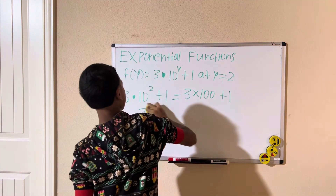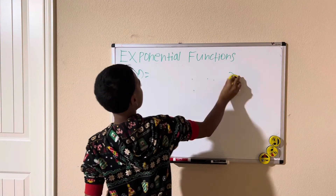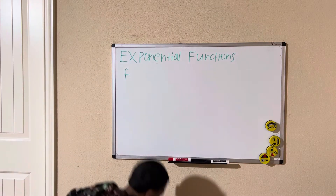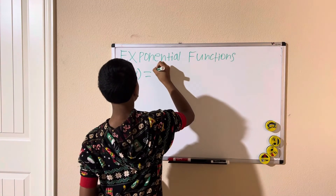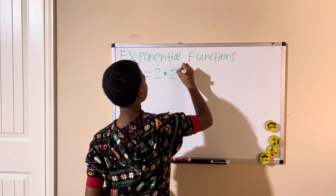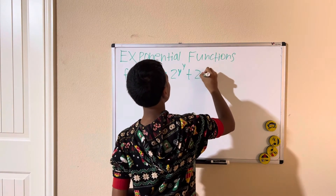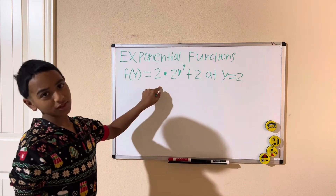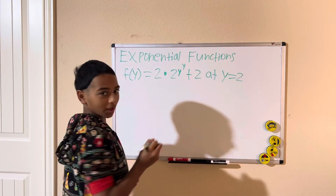Let's do one more example — a trickier, more complex one. We have f of y equals 2 times 2y to the power of y, plus 2, at y equals 2. What do you do for this one? We have 2 times y — that is, 2 times y to the power of y — and we're going to plug in y equals 2.